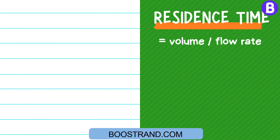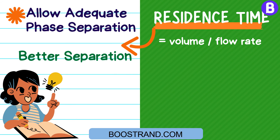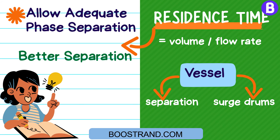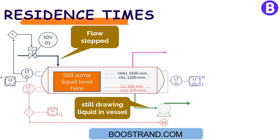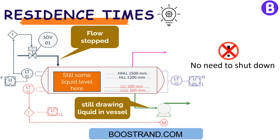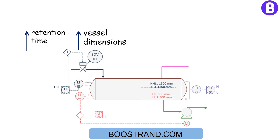Residence time is an essential factor that should be considered in vessel sizing to allow adequate phase separation. As fluid has more time to settle in the vessel, we can obtain better separation. However, retention time is not just related to separation. Vessels, in addition to being used for separation, are also used as surge drums in many cases. So if there is some process instability upstream of the vessel, the vessel can still provide liquid to the downstream process for some time without the need to shut down the system until the liquid level is too low. The plant operator can utilize that time to solve the issue, eliminating the need for a shutdown. However, the more retention time considered, the more vessel dimensions will be, so the retention time shouldn't be exaggerated.